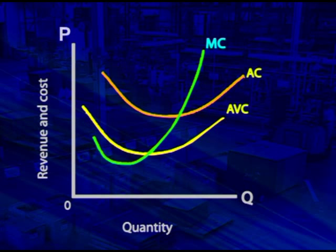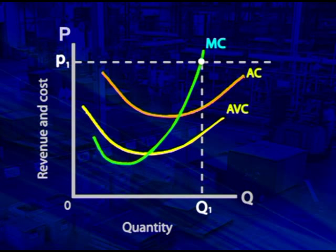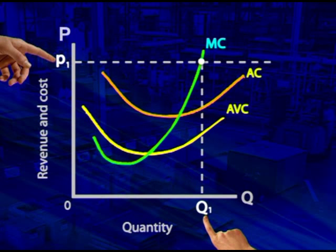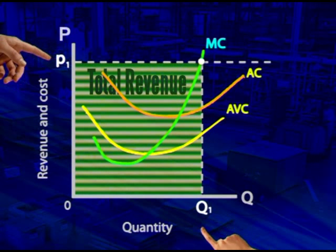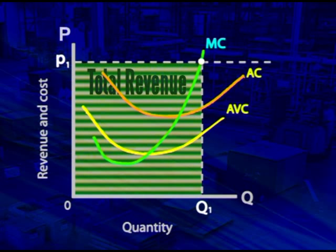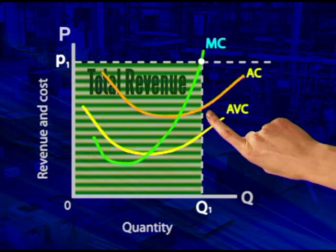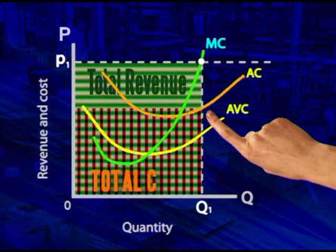So how profitable is the firm at P1? The money earned from sales is the selling price multiplied by the quantity of the product sold. The total revenue is the price, P1, times the quantity, Q1. But what's the total cost? It will be the average cost per unit times the quantity produced at Q1.